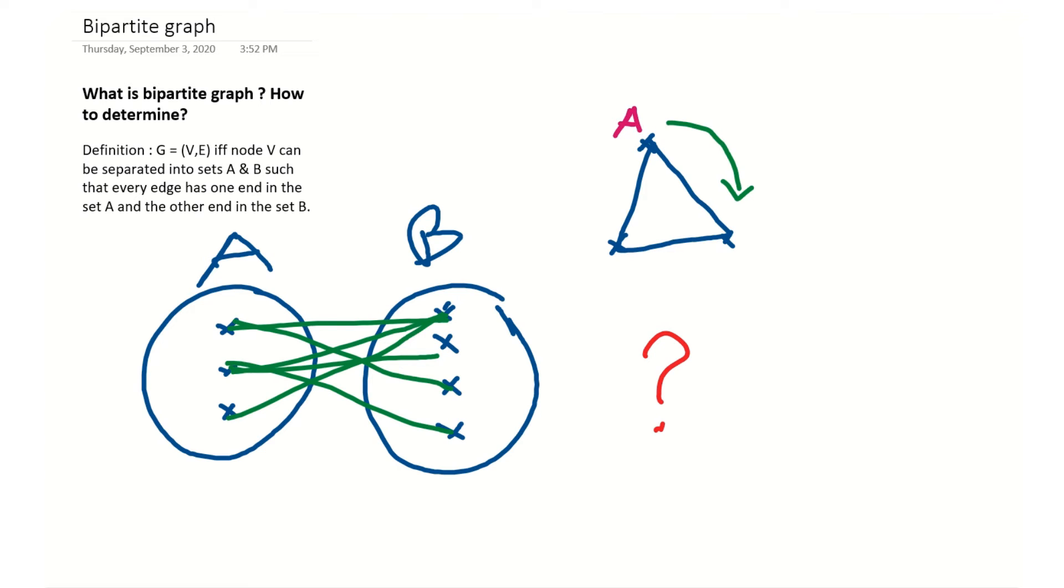bipartite graph. But if you look at this edge, you can see both nodes corresponding to this edge are in set A.